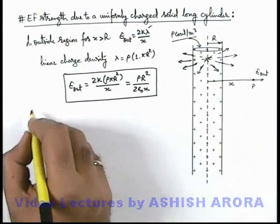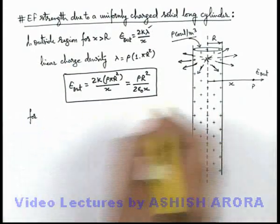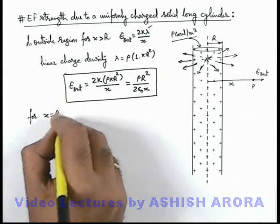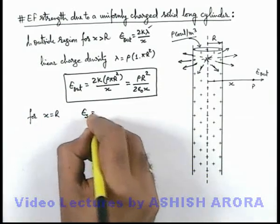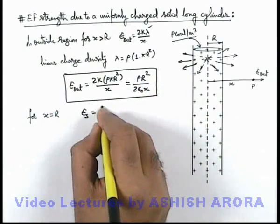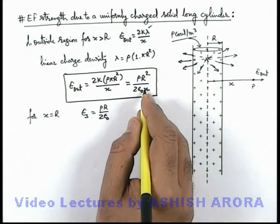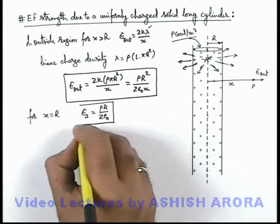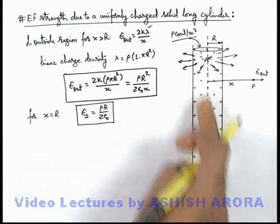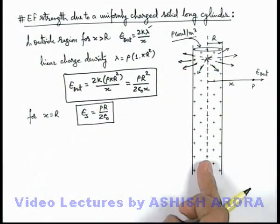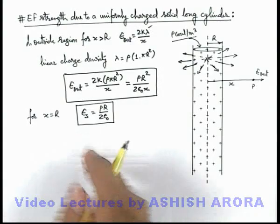If we calculate for surface points, then for x equal to R directly we can write E on surface can be directly given as ρR/2ε₀ because if we substitute x equal to R, one R gets cancelled out. So on surface points of long uniformly charged cylinder electric field is given by this.